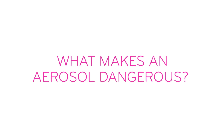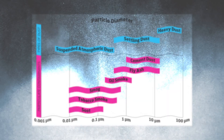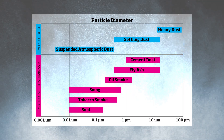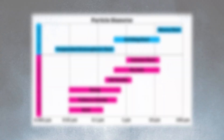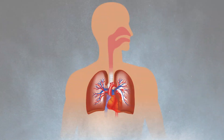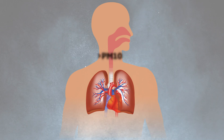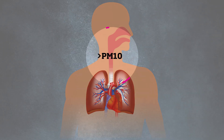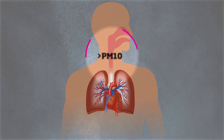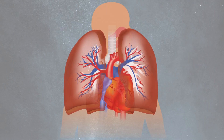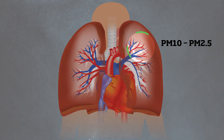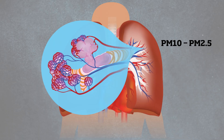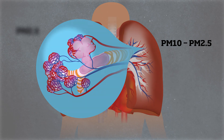What makes an aerosol dangerous? Aerosol size is the most important characteristic to consider for health risk classification. Size determines where the particle can be deposited in the lungs. Particles sized at 10 micrometers and below can reach the throat and lungs when inhaled. The smaller the particle, the deeper into the lungs it can travel.